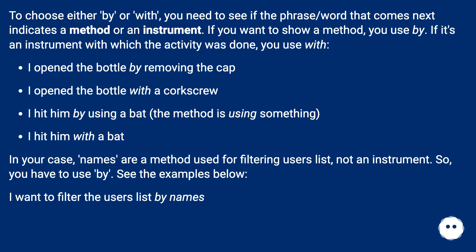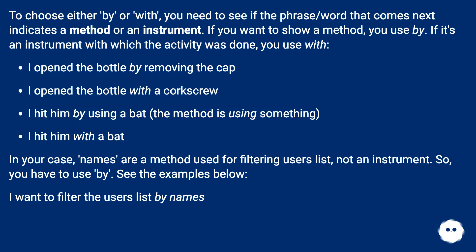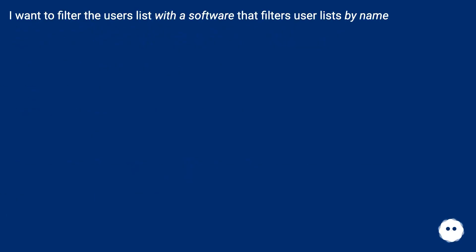In your case, names are a method used for filtering the users list, not an instrument, so you have to use 'by'. For example: I want to filter the users list by names. Compare with: I want to filter the users list with a software that filters user lists by name.